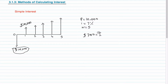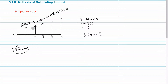In simple interest, this seven hundred dollars that you earn from interest is static — it doesn't change in the next period or the periods after that. So in the second period it would be ten thousand plus two times seven hundred, which is eleven thousand four hundred. And in your third period it would be ten thousand plus three times seven hundred, which is twelve thousand one hundred.